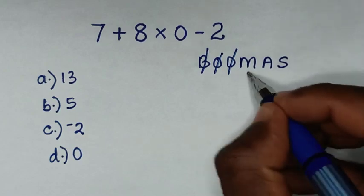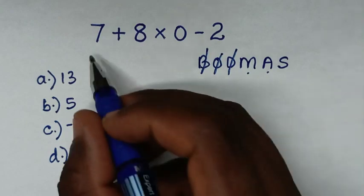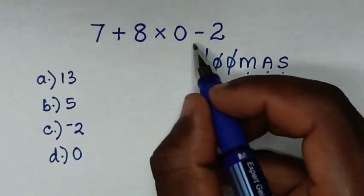But we have multiplication, which is this, 8 times 0. We have addition, which is this, and we have subtraction, which is this.